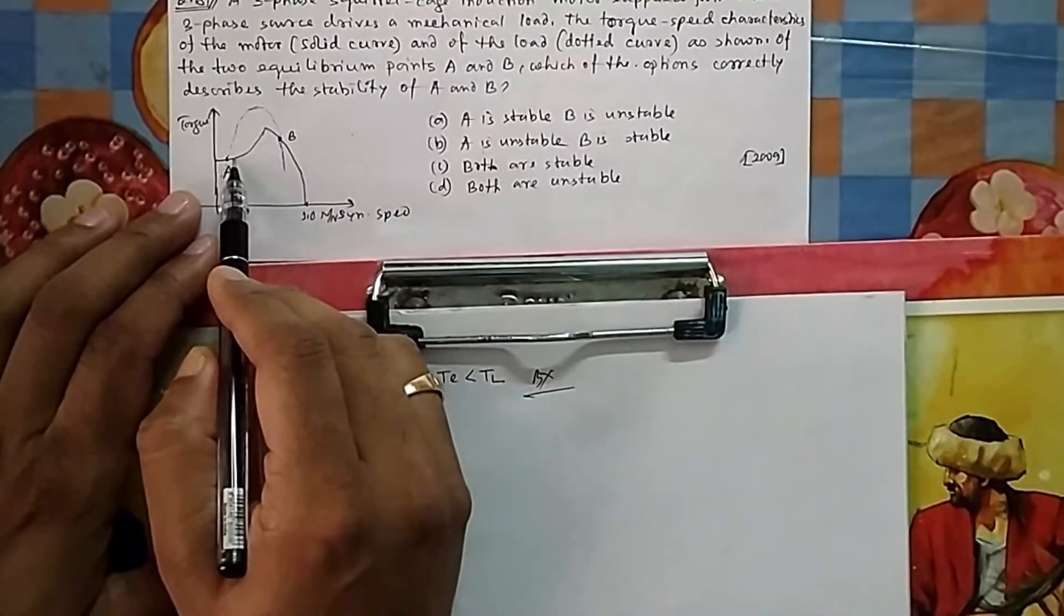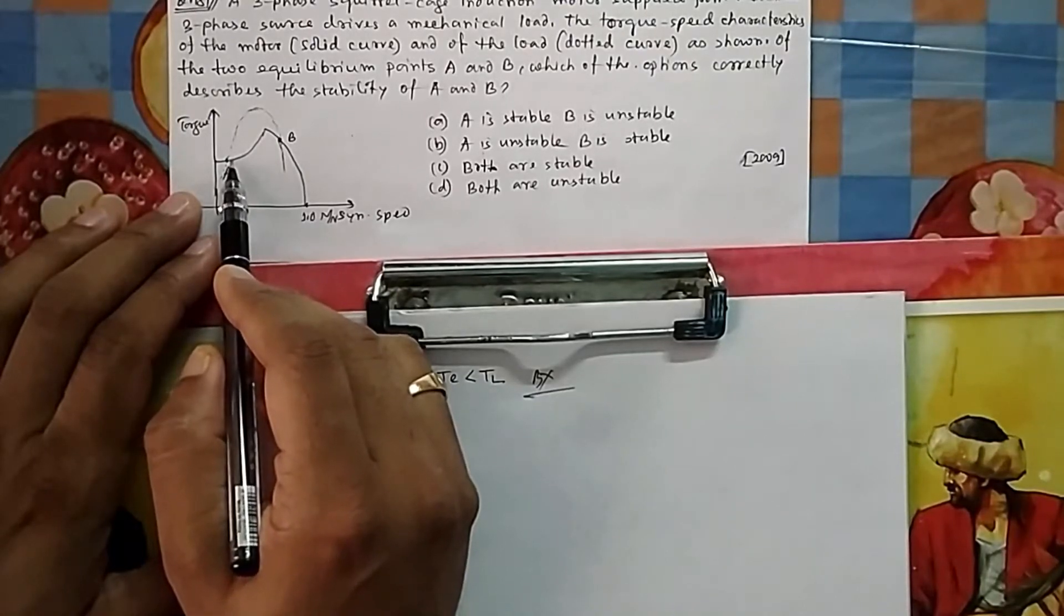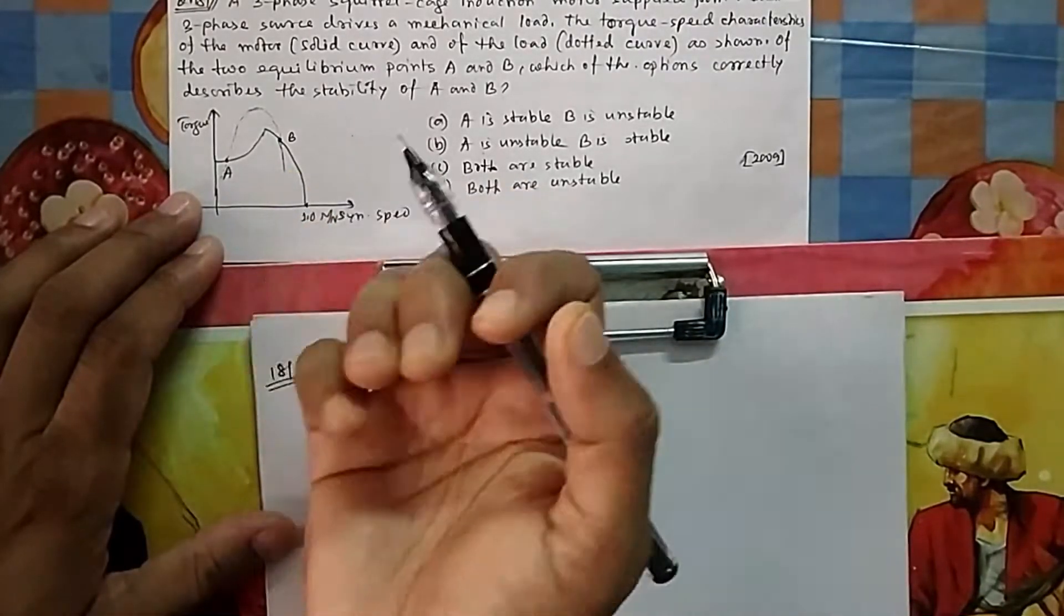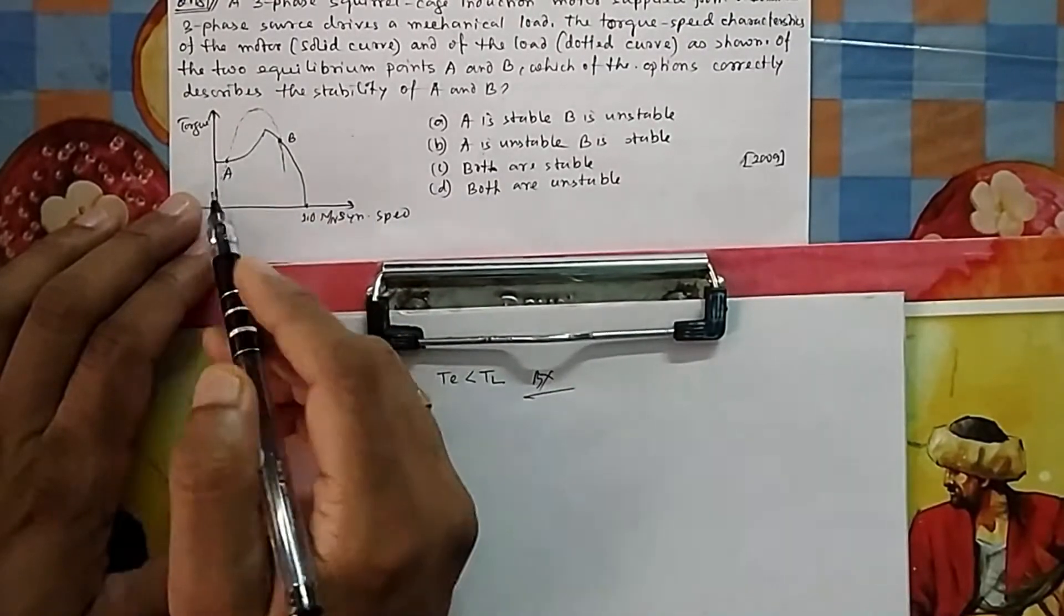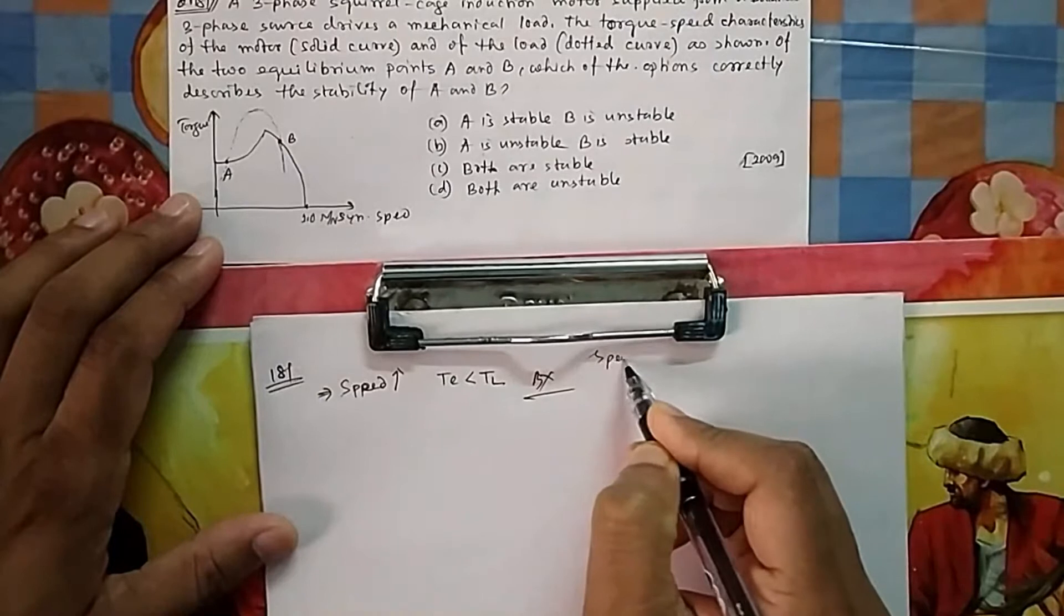Come to A. If speed is increased, electromagnetic torque is less than TL. Because generated torque is less, the tendency of the motor is to come back. The speed will automatically reduce and come back to A. Similarly, if speed is reduced somehow...